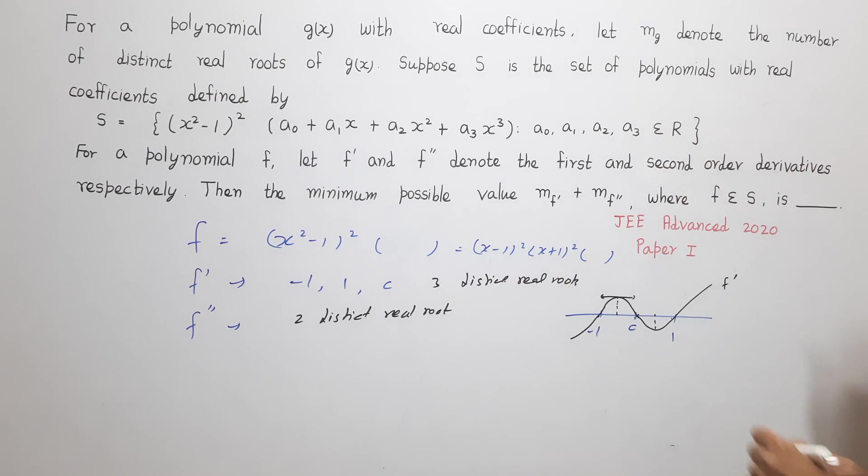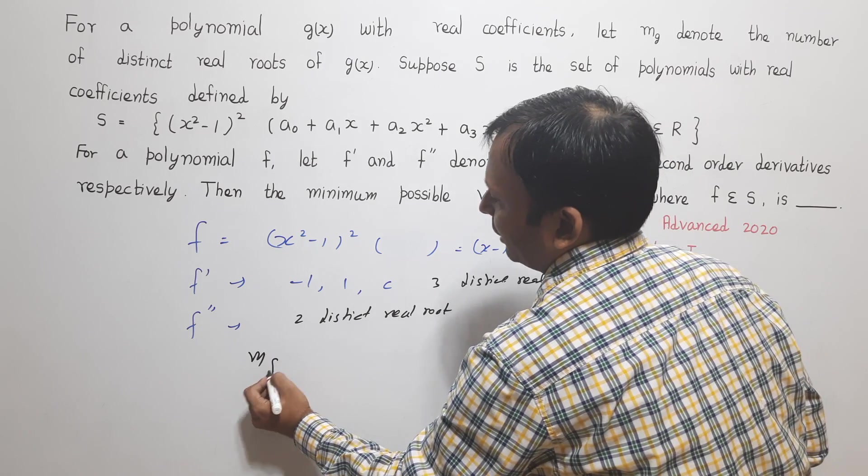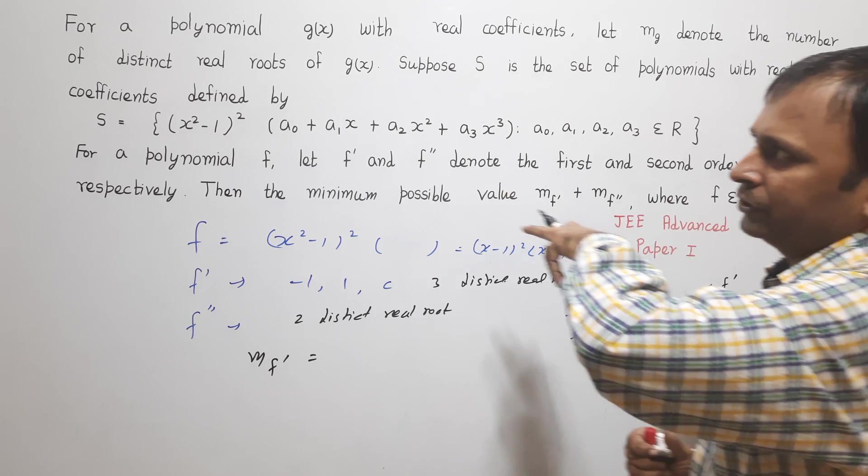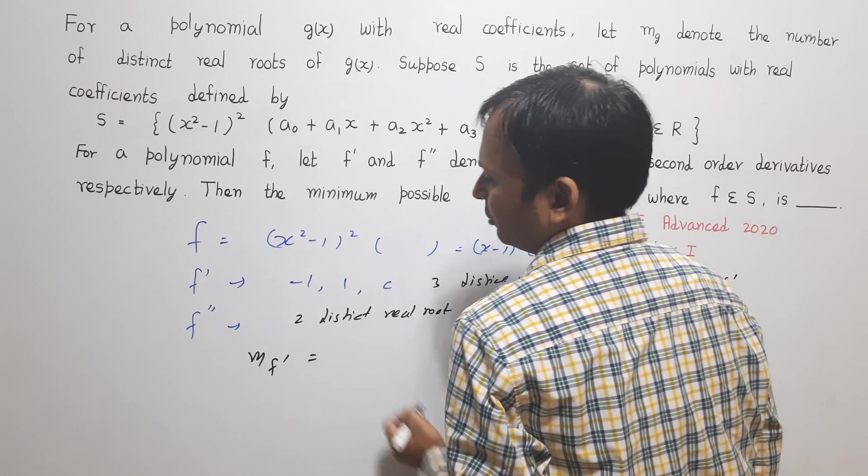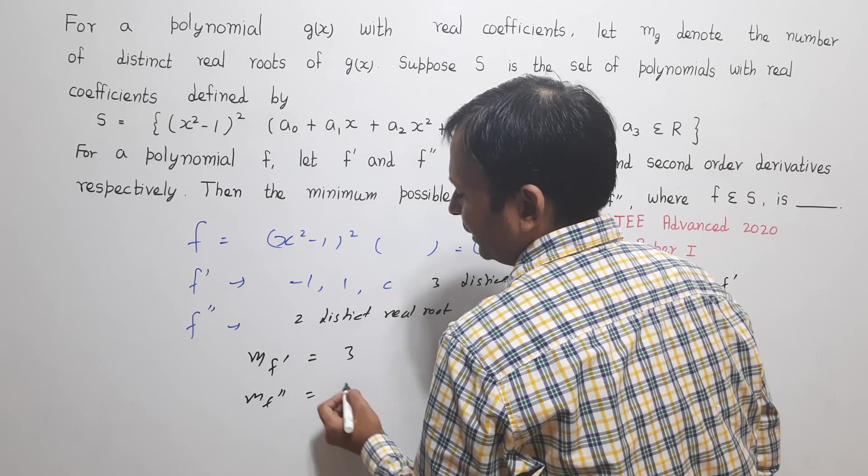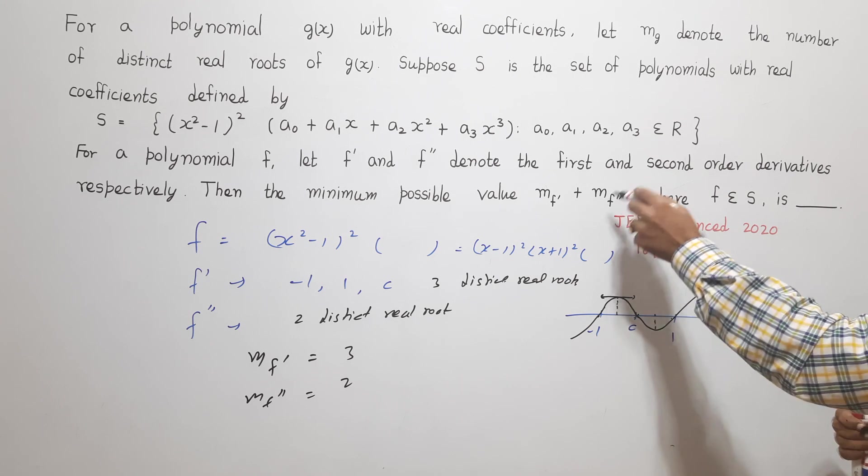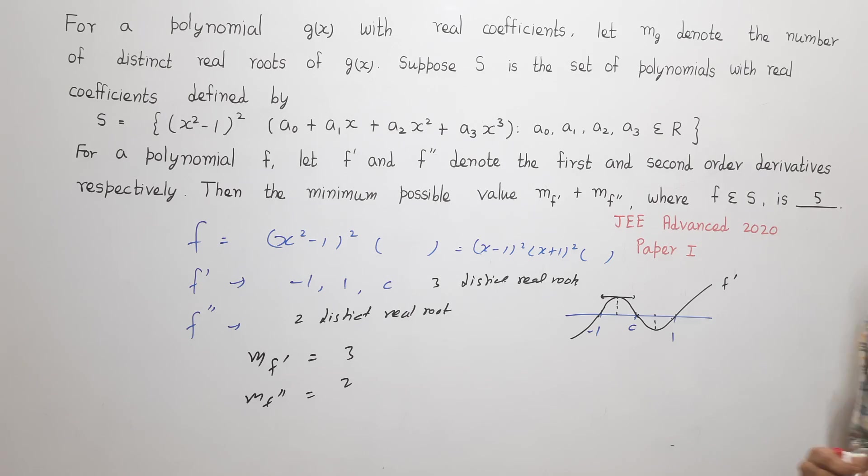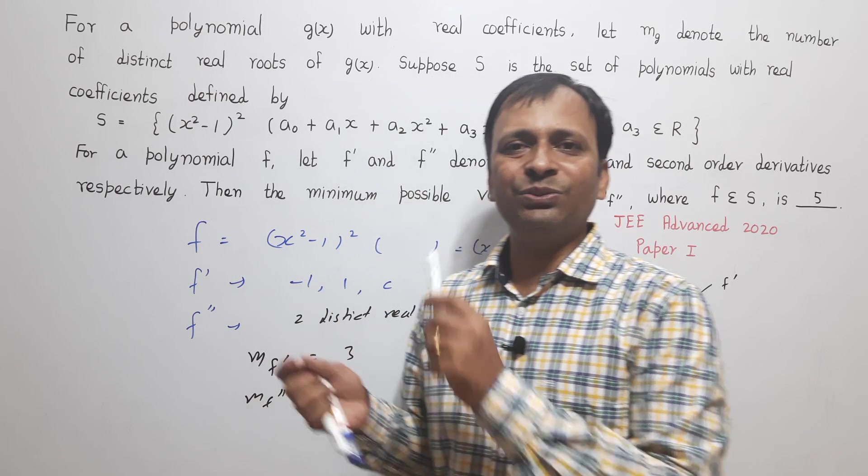Now what they have indicated which is M_g. So if I write on the same line, what will be the value of M_f'? M_f' will be the number of distinct real roots of g(x). So the minimum value of M_f' will be equal to 3 and similarly the minimum value of M_f'' will be equal to 2. Now what we need is to find out M_f' + M_f'', which is clearly 3 + 2 = 5. So the minimum value of M_f' + M_f'' is equal to 5, which is the answer to this question.